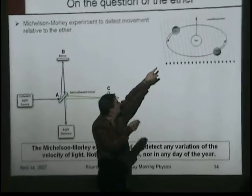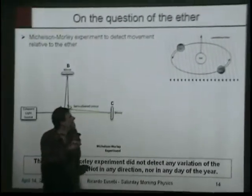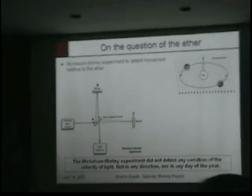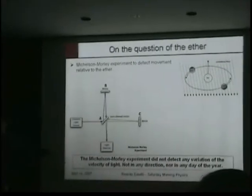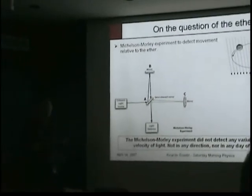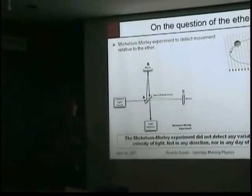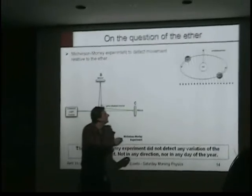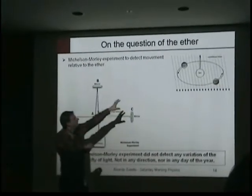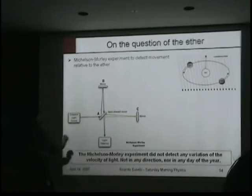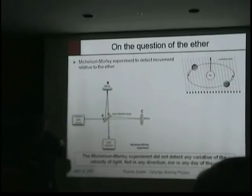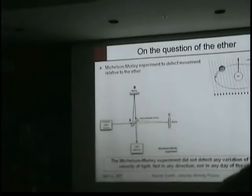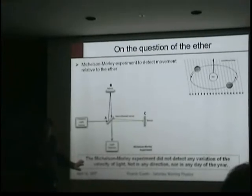They measured in all orientations and always got the same result: the velocity of light was the same regardless. This is one of the key experiments showing that even if there is an ether, we see no variation in the velocity of light. Additionally, by that time the movement of planets was measured very precisely. If something were permeating the universe, you would see the Earth and all planets losing energy as they orbit the sun, slowing down over time. They didn't see that either.